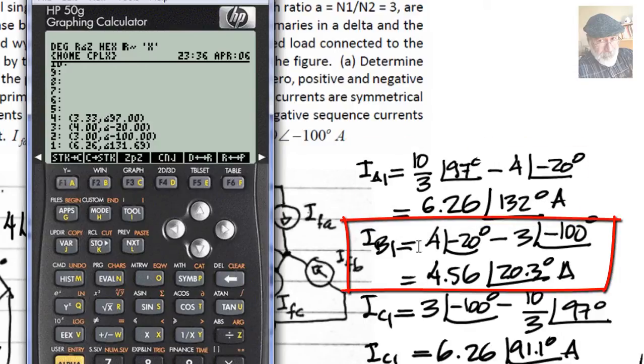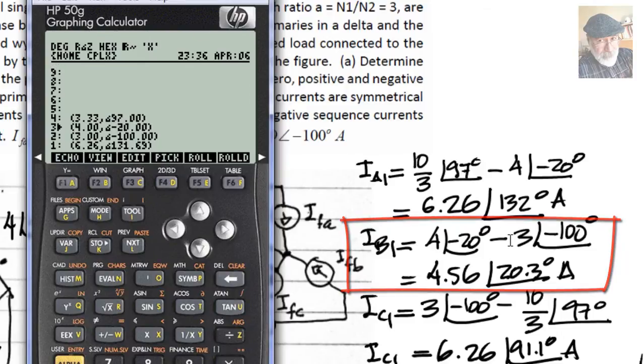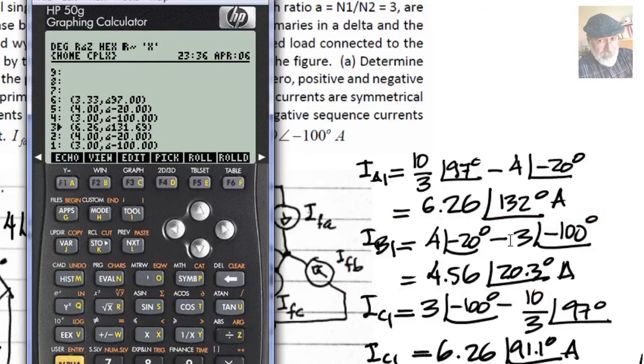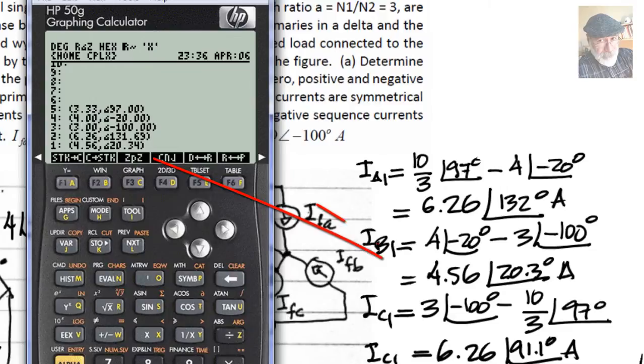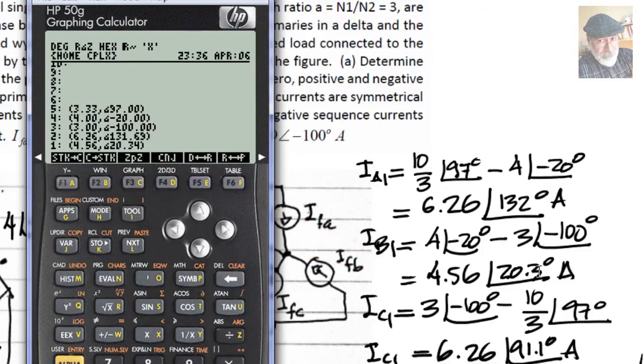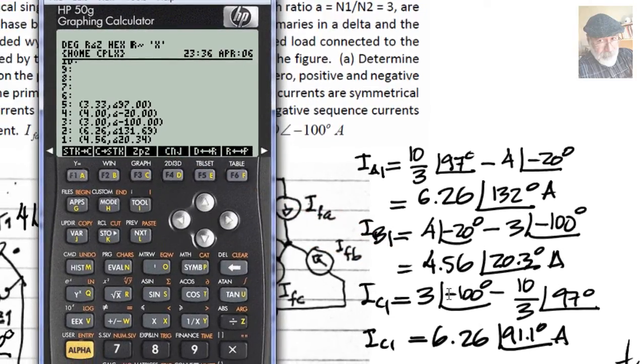And then what? And then 4 minus 3. Oh, sure. Let me go up here. I say pick, pick, 4 minus 3 with the phases and everything, subtract, that is the result. 4.56 with 20 degrees, which you see up here. 4.56 with 20.3 degrees. That is the second current.